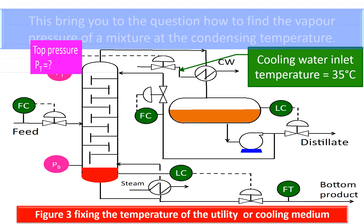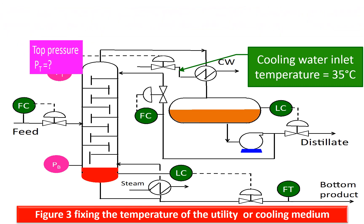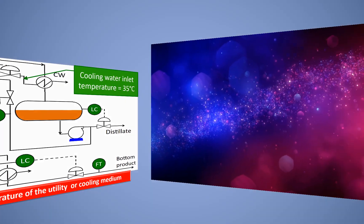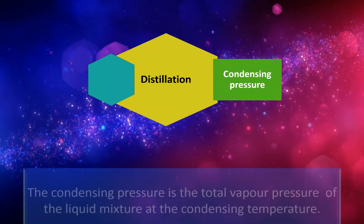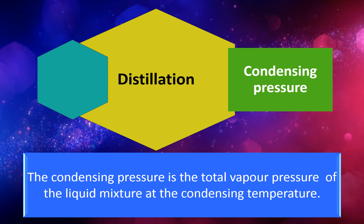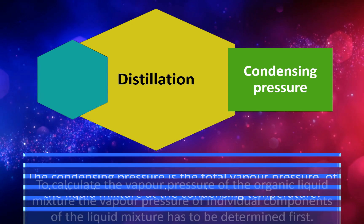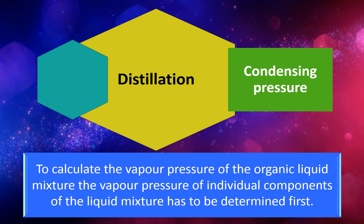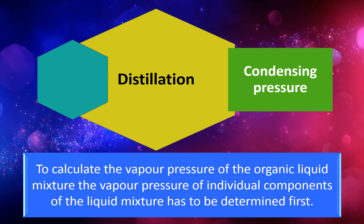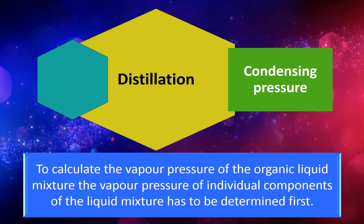This brings you to the question: how to find the vapor pressure of a mixture at the condensing temperature? The condensing pressure is the total vapor pressure of the liquid mixture at the condensing temperature. To calculate the vapor pressure of the organic liquid mixture, the vapor pressure of the individual components of the liquid mixture has to be determined first.